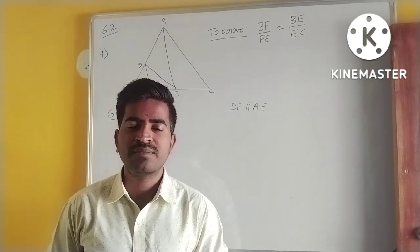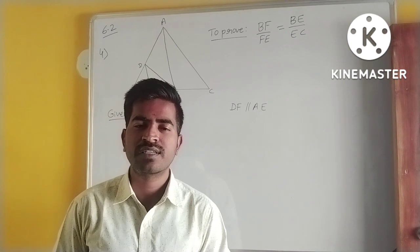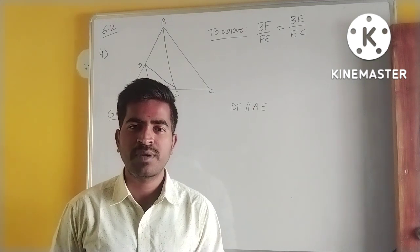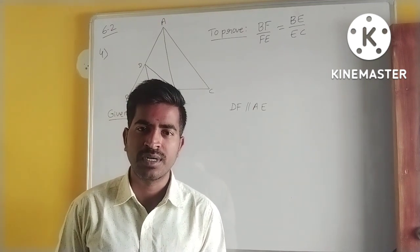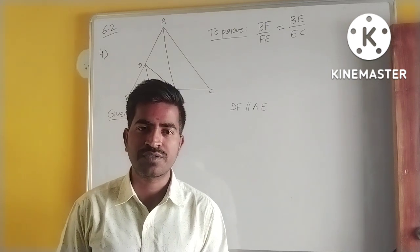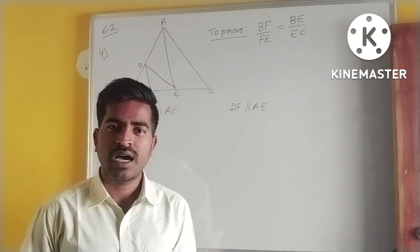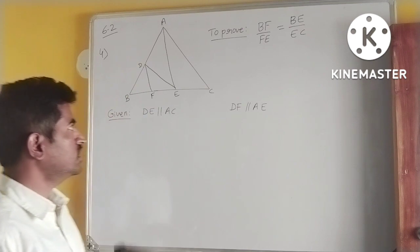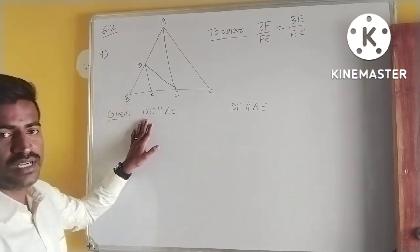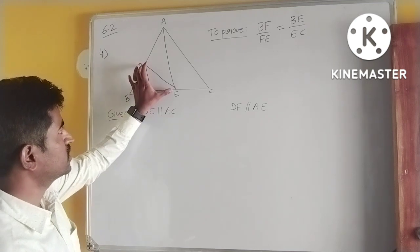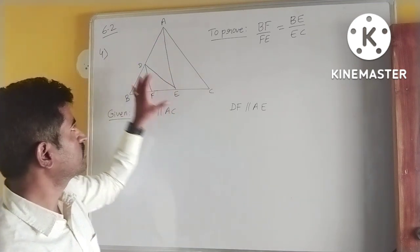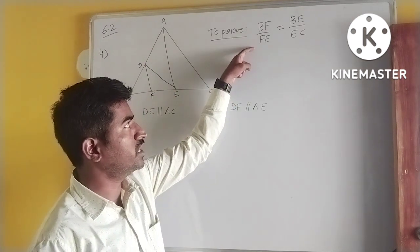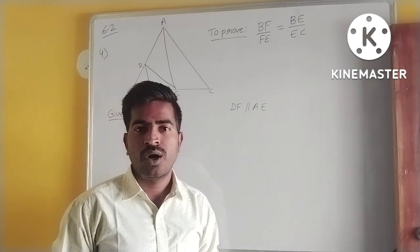Hello guys, welcome. In the last video I explained the Basic Proportionality Theorem and its proof. In this video I will explain a question on BPT — how to apply BPT for a given set of triangles. The question is the fourth main in Exercise 6.2. The given data is: DE is parallel to AC, and DF is parallel to AE. We have to prove that BF by FE is equal to BE by EC.